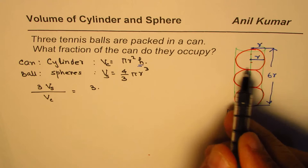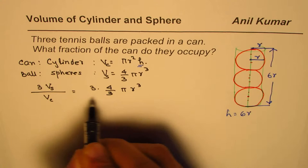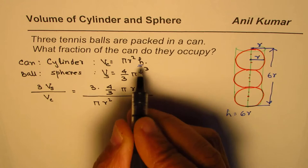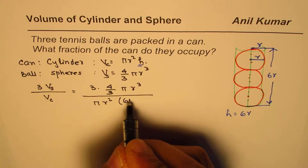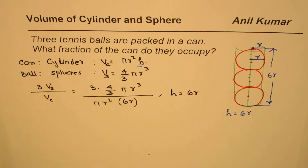It is three times volume of each, which is 4/3 πr³, divided by volume of the cylinder, which is πr²h. Now instead of height h, I'll write 6r.